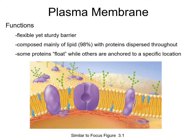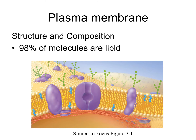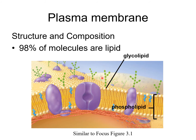Looking more closely at the constituents of the plasma membrane, focusing first on the lipids: the plasma membrane has two layers of phospholipids. The polar heads form the surfaces — the extracellular face and the intracellular face — while the nonpolar tails make up the center. Some phospholipids have a carbohydrate component attached to them, making them glycolipids — a lipid with a carbohydrate moiety attached.